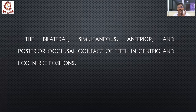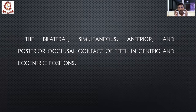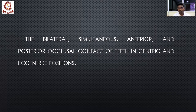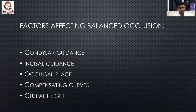Balanced occlusion should be bilateral, simultaneous, and include both anterior and posterior contacts. This concept also applies to protrusive movement — when the patient protrudes and makes incisal contact, the molars must also come into contact to prevent dislodgement. There are five factors which influence balanced occlusion: condylar guidance, incisal guidance, occlusal plane, compensating curve, and cuspal height.